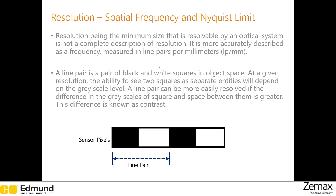As you can see here, the line pair is a pair of black and white squares in object space. The resolution will be defined based on the relative differences in the grayscale values of these squares and spaces. This difference is called contrast.